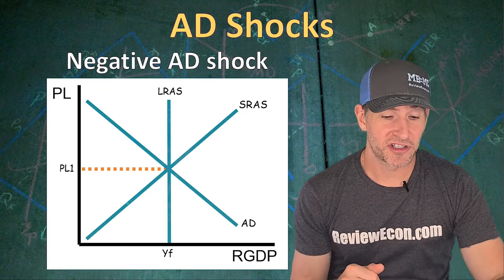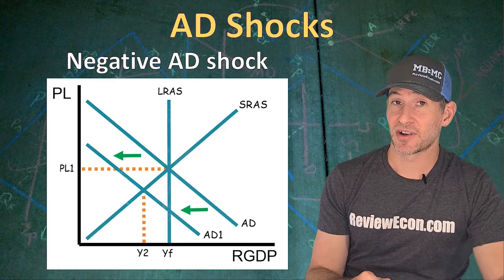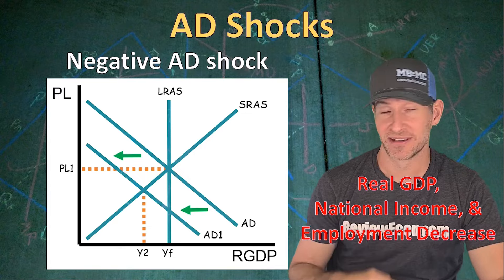If we have a negative aggregate demand shock, that means the aggregate demand curve has shifted to the left. That is going to decrease our real output, national income, and employment, and increase unemployment. We are also going to see our price level fall, which means inflation has decreased.